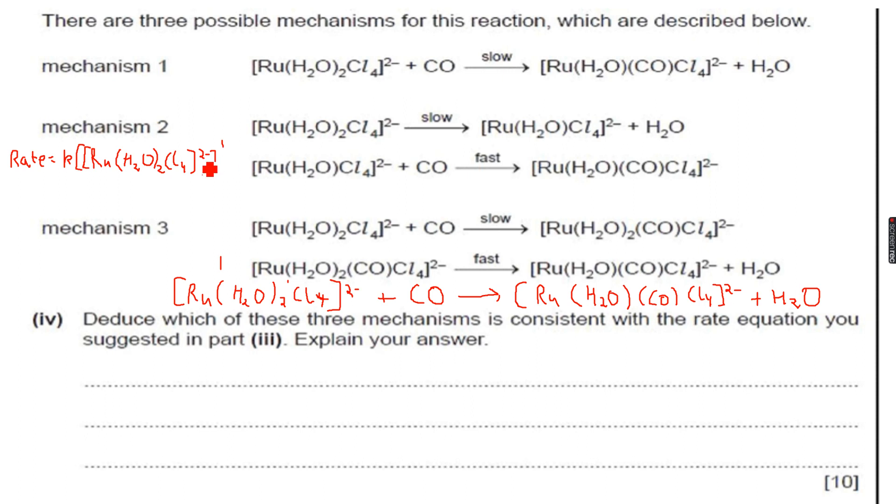And this is also raised to the power of 1. Don't take the charge as the power, take the power on the overall ion, which is 1. Now we know that in the correct mechanism, we are given three possible mechanisms over here, mechanisms 1, 2, and 3, and we have to deduce which of these three mechanisms is consistent with the rate equation.